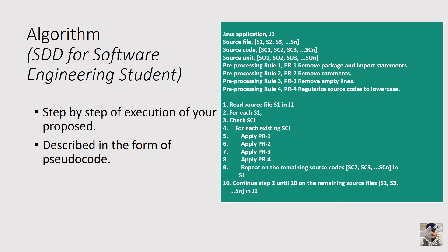Another way of describing the proposed design is algorithms. Some projects may use algorithms to enhance or develop the solution. You can use the flowchart and then further explain it using the algorithm. Basically, an algorithm is a step-by-step execution of your proposed work, described in the form of pseudocode. If you see the figure on the right, the first thing described is the input.